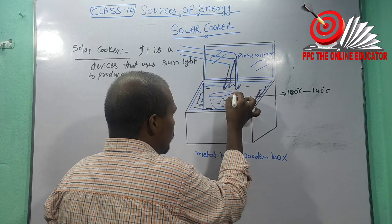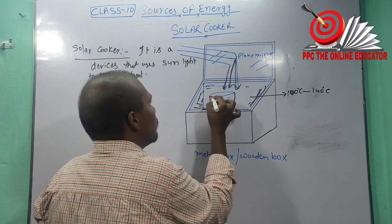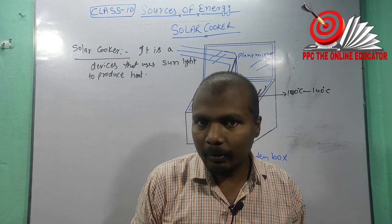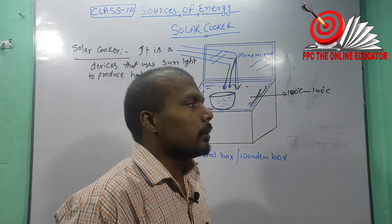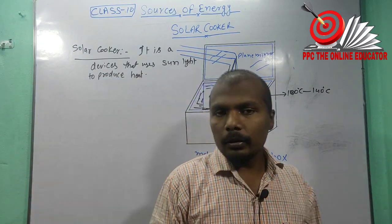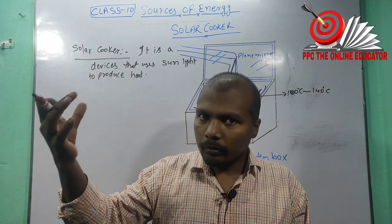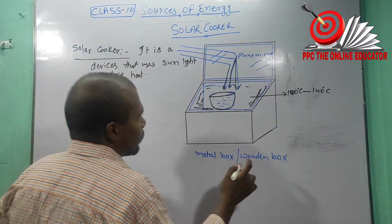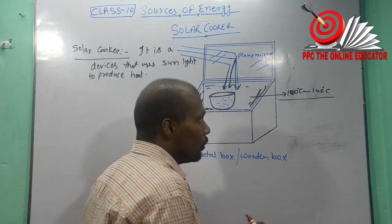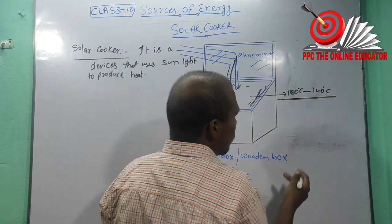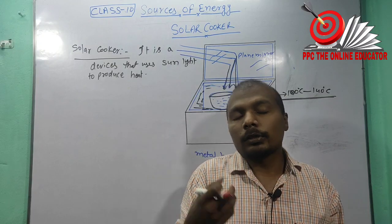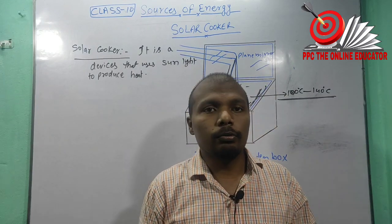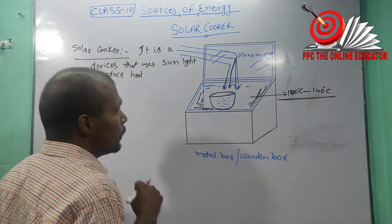The container also has an important role. The container in which we place food items like rice, pulses, and vegetables should also be colored black. Black color is used because it absorbs sunlight and retains heat. This temperature of 100 to 140 degrees Celsius is enough for cooking food items like rice, pulses, or vegetables.